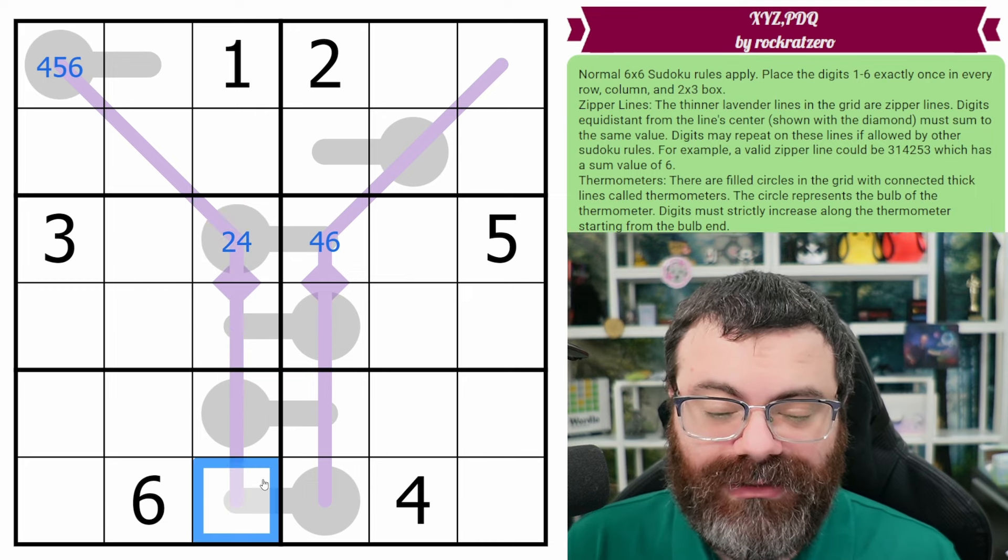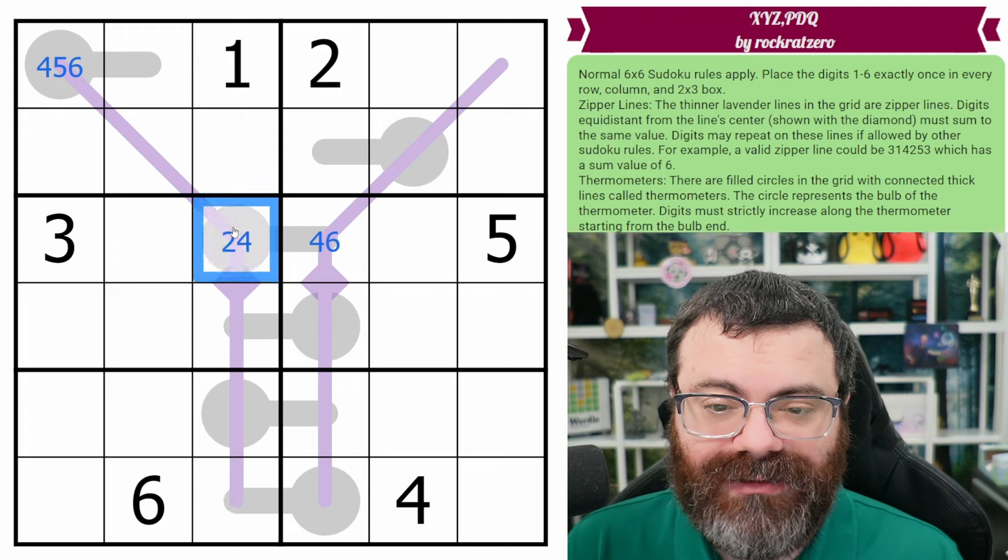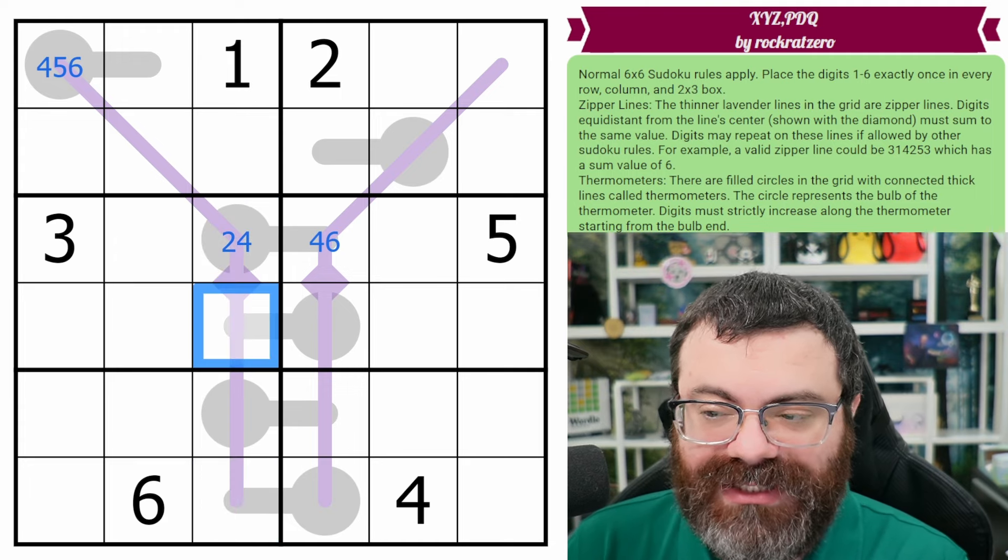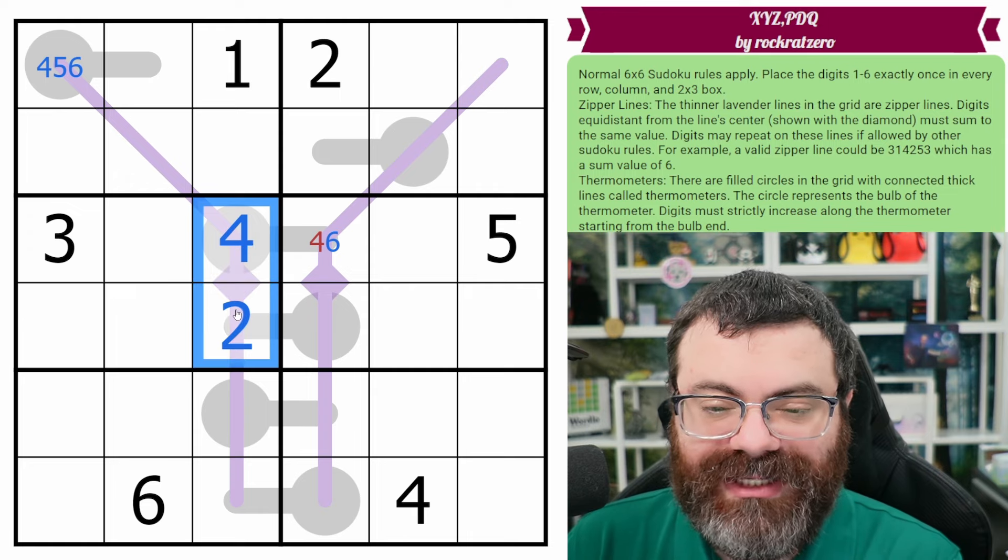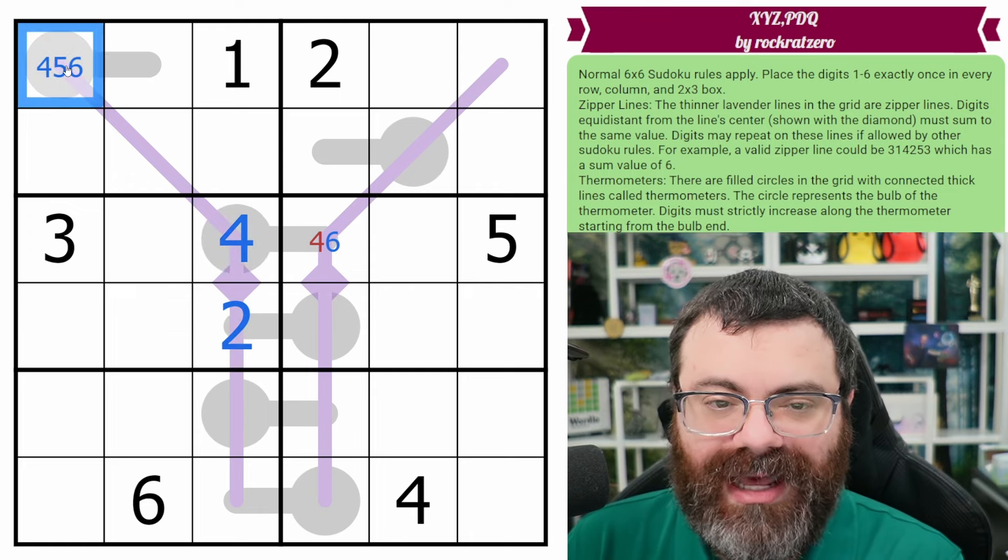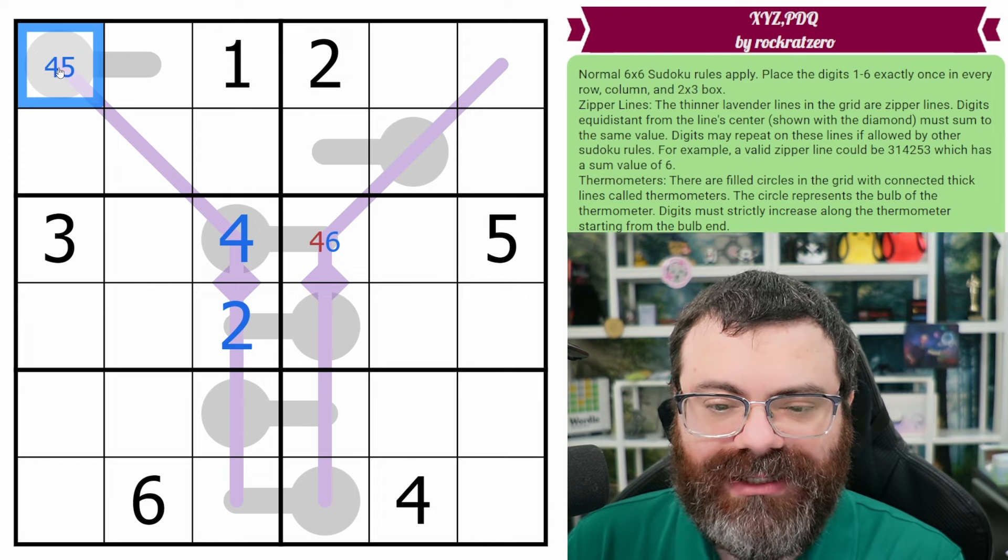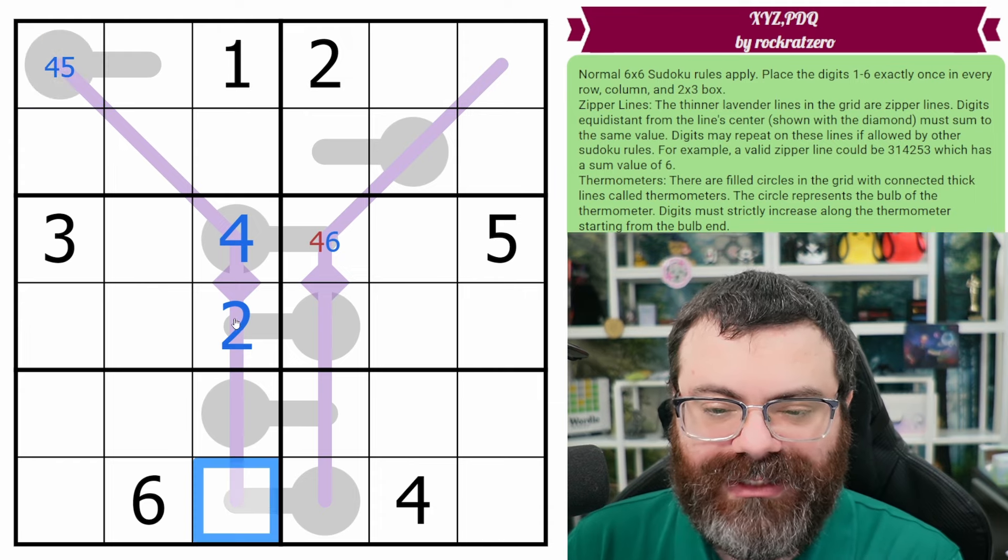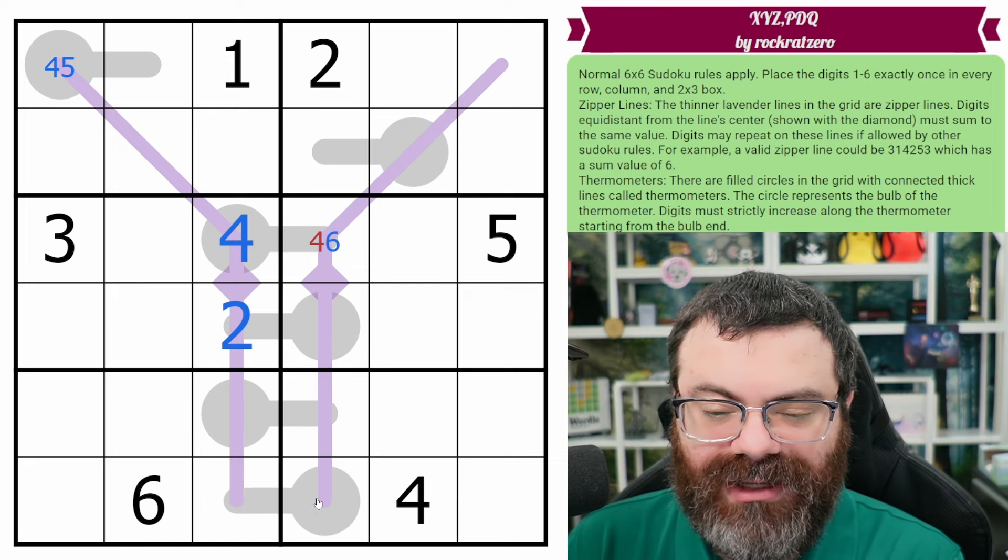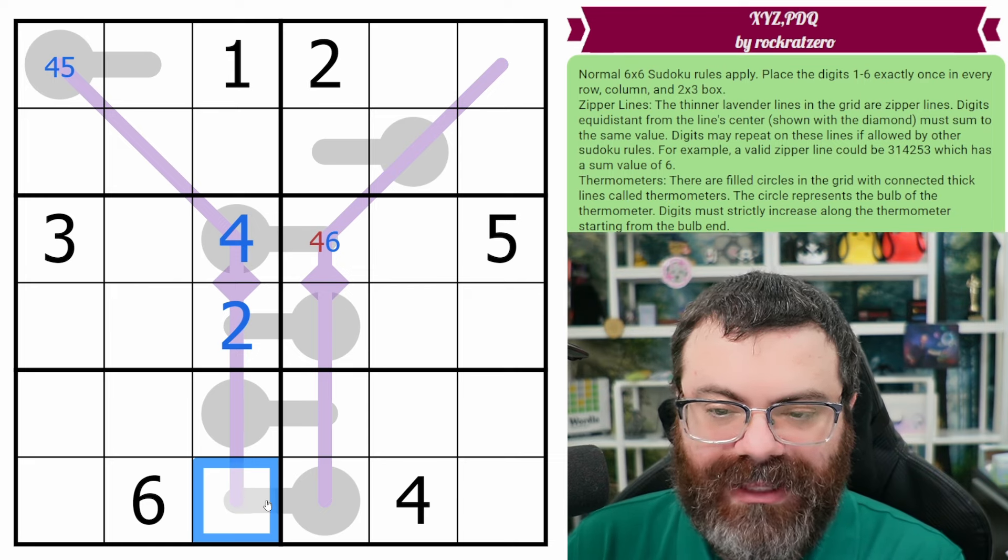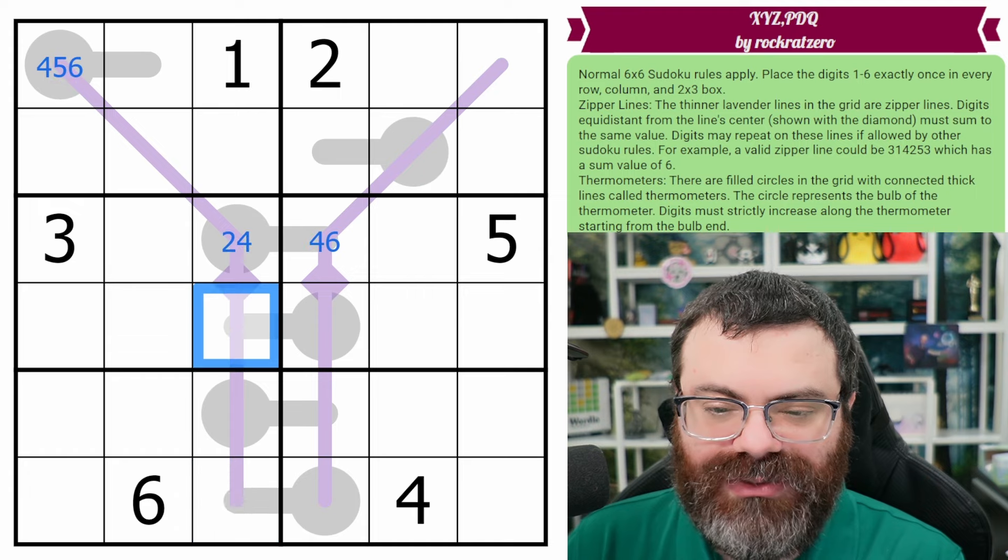No, I could do five, one. I was trying to think—oh, no, I can't hold on. So let's think about this. If this was a two, that makes this a four. That makes our sum six on this zipper line. How are we getting to six? Well, we're certainly not using a six. We're also not using four and two here. This can't be a two anymore. And we're not using five and one because you can't put one on this side of a thermo.